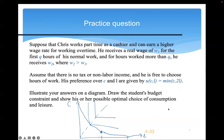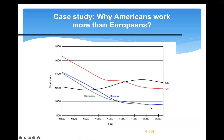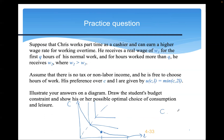To wrap up: in this lecture we focused on consumer behavior in terms of consumption and leisure choice. We started with preferences, then the budget constraint, then how consumers solve the optimization problem to choose the optimal bundle of C and L. In the next lecture, we will cover firm behavior and how firms make their optimal choice, giving us a complete picture of how the market works at the micro level from both the consumer and firm side.